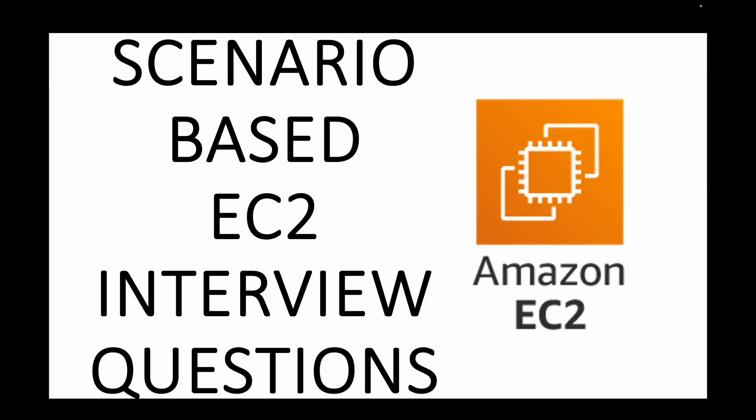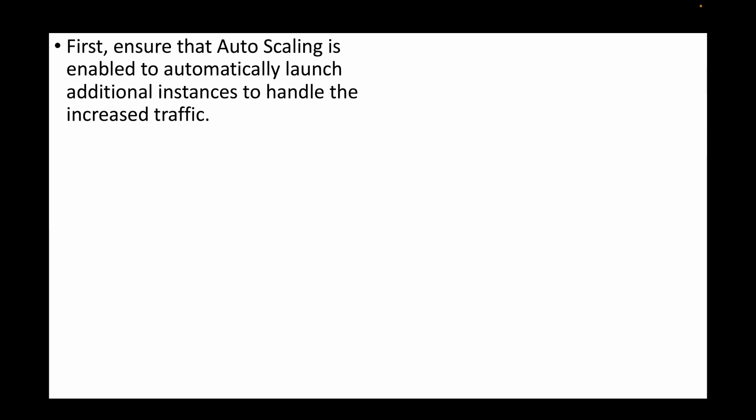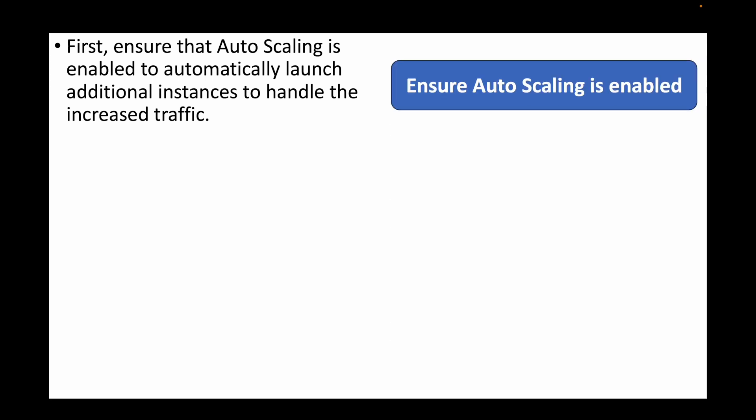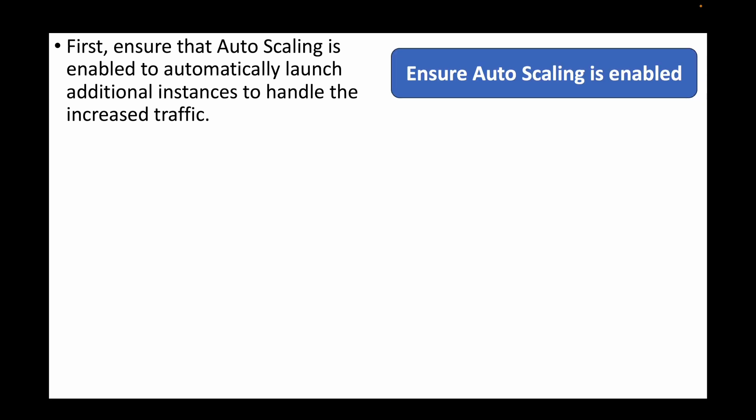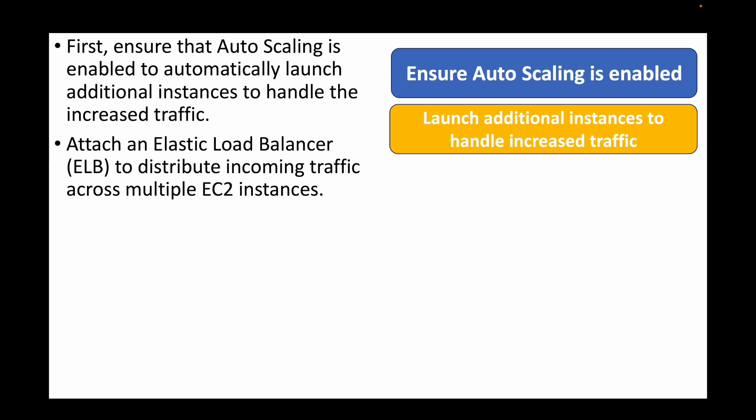The first question is: you're running a website on an EC2 instance and you experience a sudden traffic surge — what steps would you take to handle the increase in traffic without any downtime? For this we can make use of auto scaling groups, which can be used to automate the scaling up and scaling down of your instances. We need to ensure that auto scaling is enabled so that we can automatically launch new instances to handle the increase in traffic.